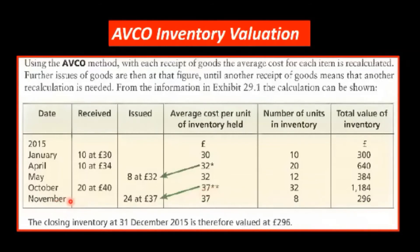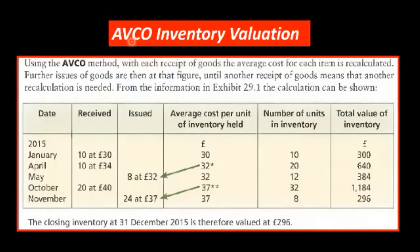In November, when we issue the 24 at 37, it would be at this 37 here. We will have 32 minus 24 — that's 8 in stock. 8 by the average cost of 37 would be 296. So this is the value of the eight units remaining in inventory using AVCO at the end of November. There's a mistake here — that should be November.